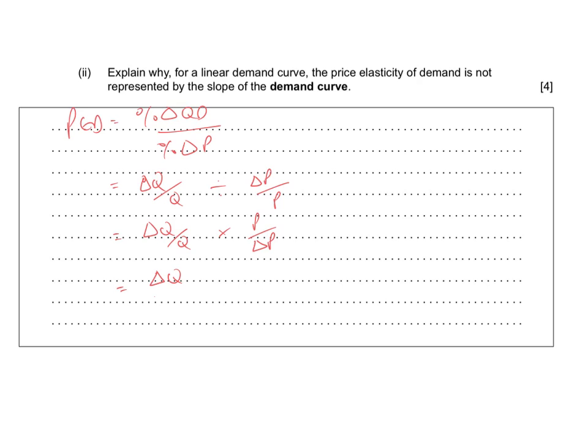Now the interesting part of this is that the delta Q over delta P element here is a constant for a linear demand curve, whereas the P over Q element will change depending on which aspect of the demand curve we're operating on. So at the top end of the demand curve, then price will be high and quantity will be low. So the constant times a larger number will give us a more price elastic value.